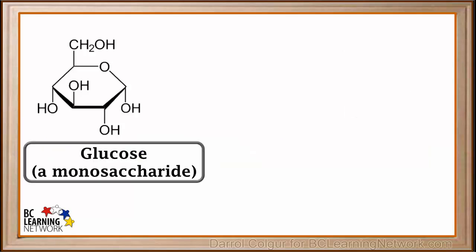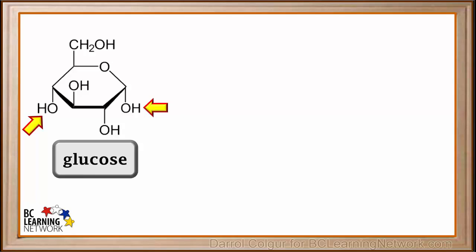A molecule of glucose contains six carbon atoms, which are numbered like this. These two OH groups are used to bond glucose monomers to each other.